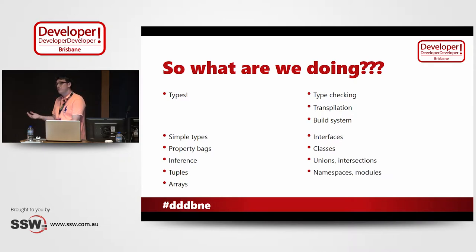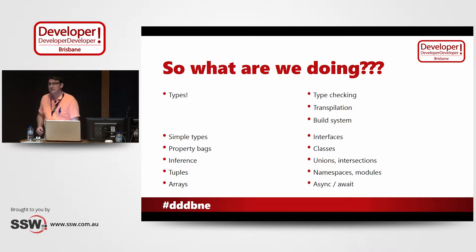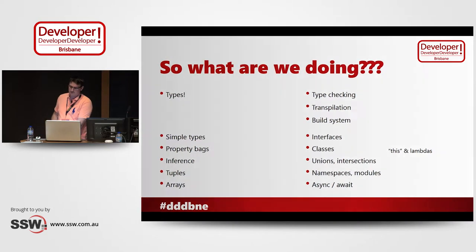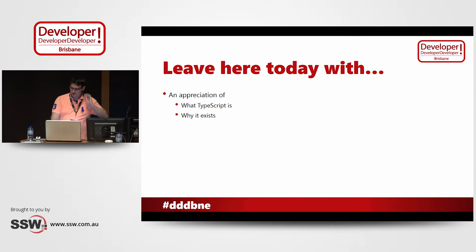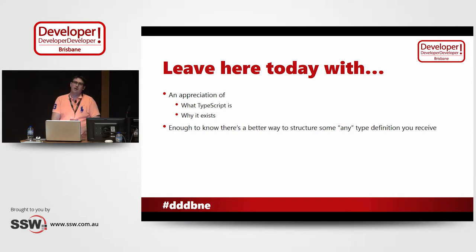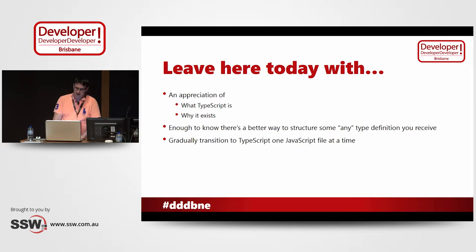We're going to look at namespaces and modules, how we can structure these bigger projects. We're going to hopefully get to some async and await. And in your classes, it handles things like 'this' and lambdas, which is what you get in ES6, but you can have it in your current JavaScript today. I hope you leave here with an appreciation of what TypeScript is, why it exists, and how it can help you in your code. We're going to look at some type definitions later on — some of them in the wild will have pretty dodgy definitions, so we'll look at how we can fix up a couple of them. And you can gradually transition to TypeScript one file at a time.